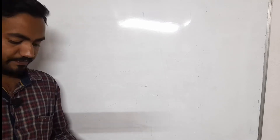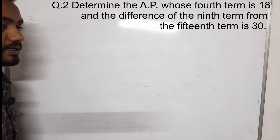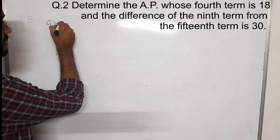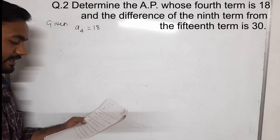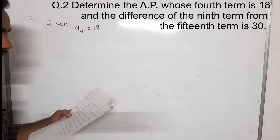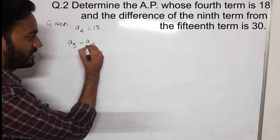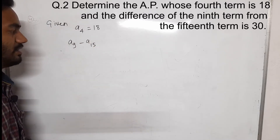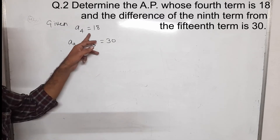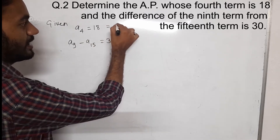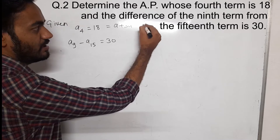Now we will do some more questions. The second question: determine the AP whose fourth term is 18. Here we need to find an AP where A4 equals 18, and the difference of the 9th and 15th term is 30. When A4 is given, it becomes A plus 3D equals 18 — that is equation number 1.